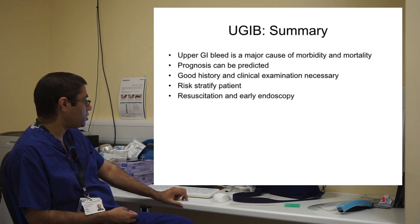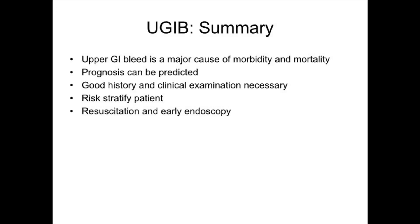In summary, as part of a general medical unselected take you are going to see upper GI bleeds, which are a major cause of morbidity and mortality. There are risk stratification systems in place that are quite accurate at predicting prognosis. Good history and clinical examination are absolutely necessary when assessing and risk stratifying these patients early, followed by resuscitation, resuscitation, resuscitation, and contact for an early endoscopy.